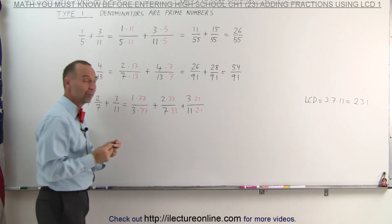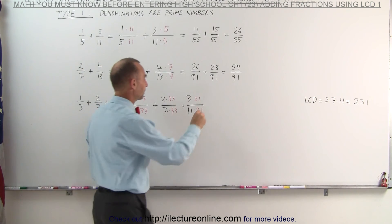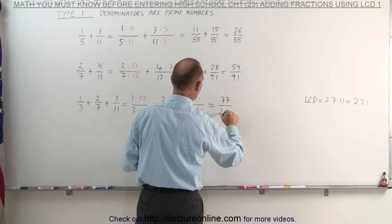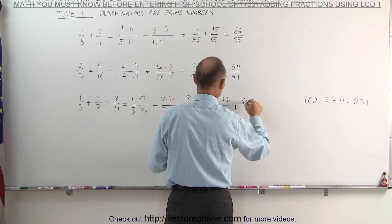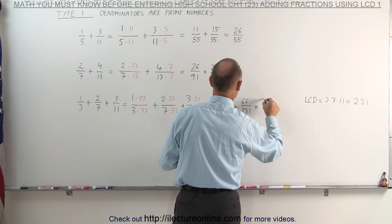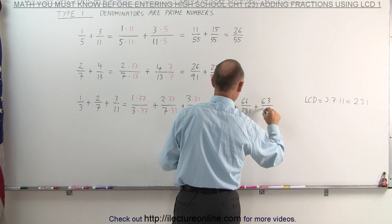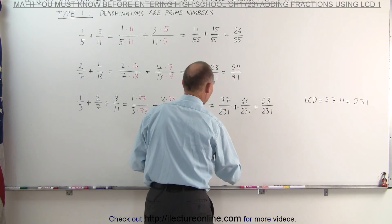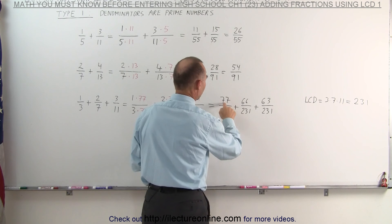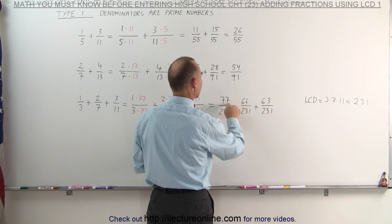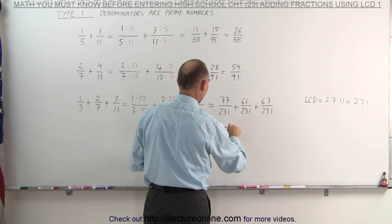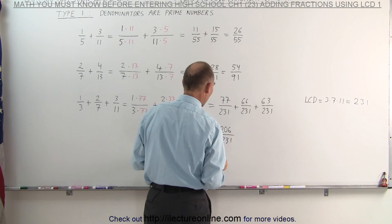Now the three fractions all have the same common denominator of 231. This is equal to 77 over 231, plus 66 over 231, plus 63 over 231. Now that they all have the same denominator, we can simply add the numerators together. 77 plus 63 is 140, plus 66 is 206, divided by 231.